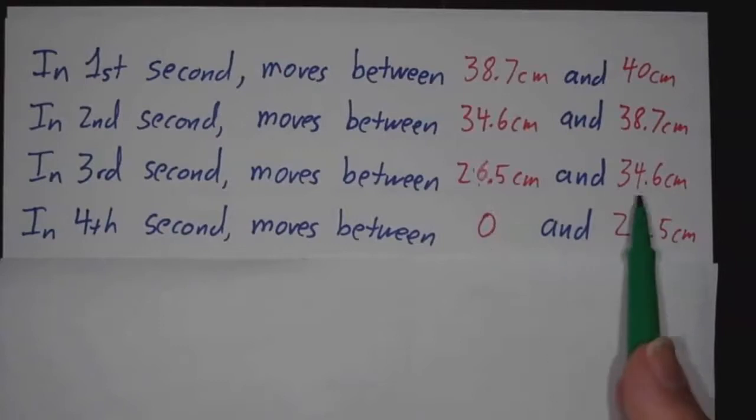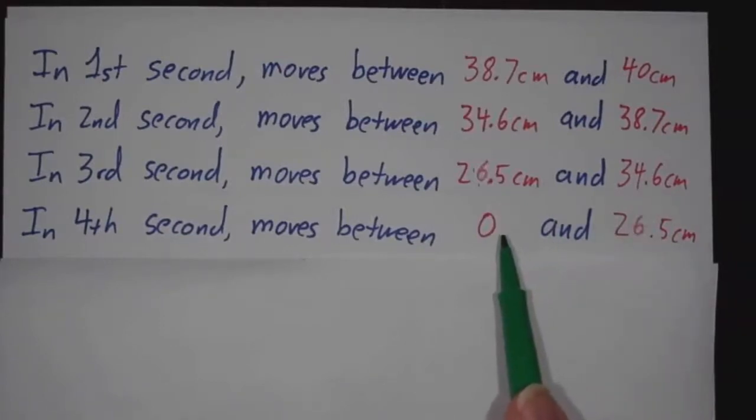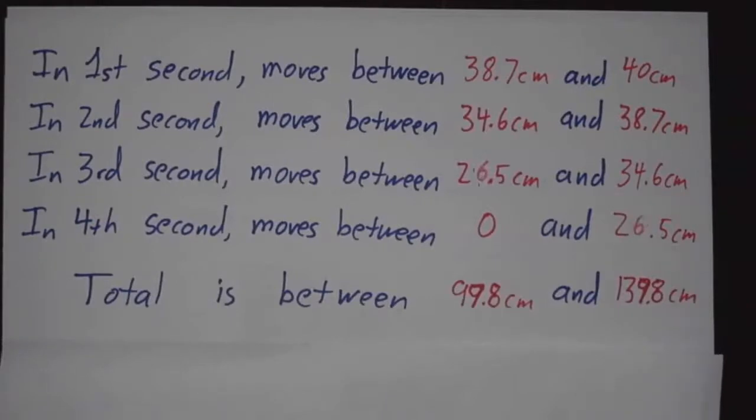In the third second, between 26.5 and 34.6. In the fourth, between 0 and 26.5. So the total is somewhere between 99.8 and 139.8.